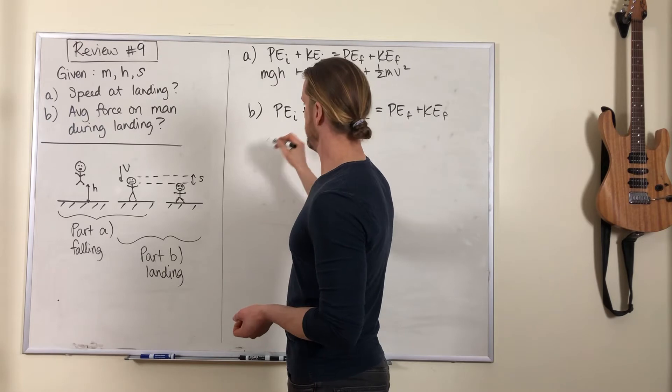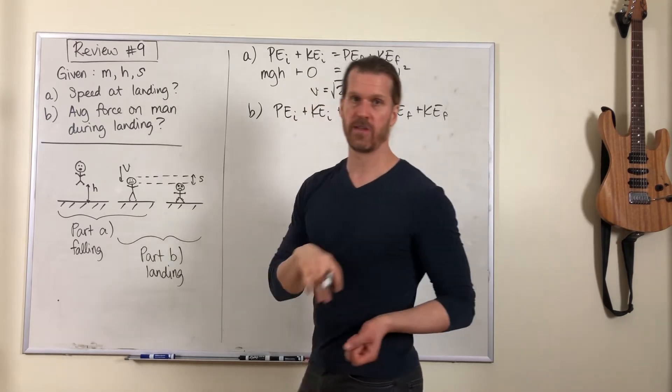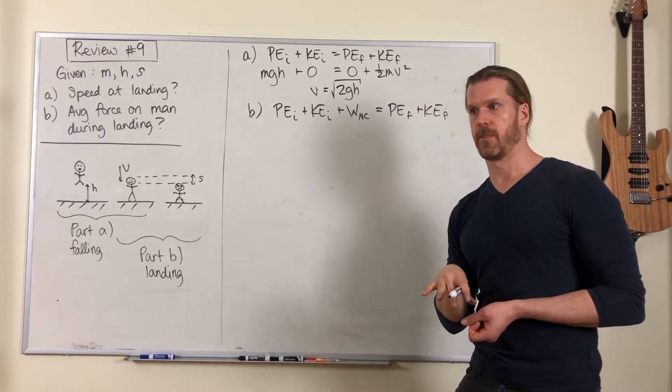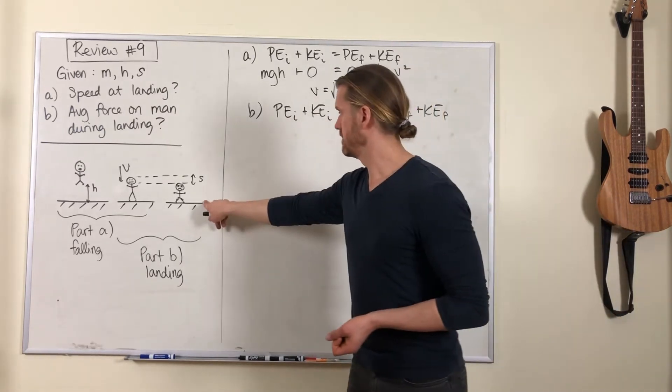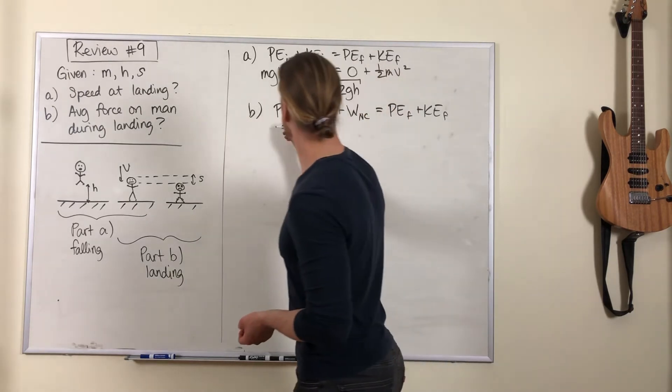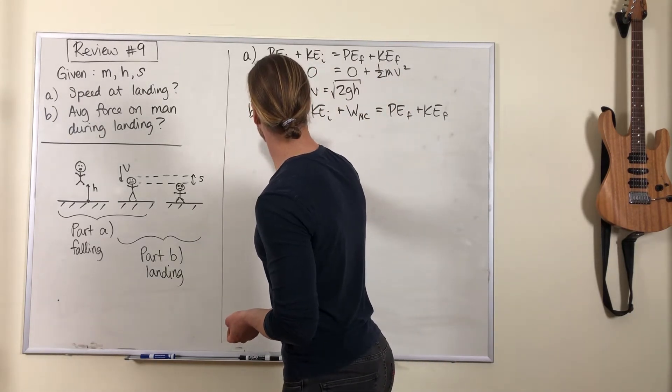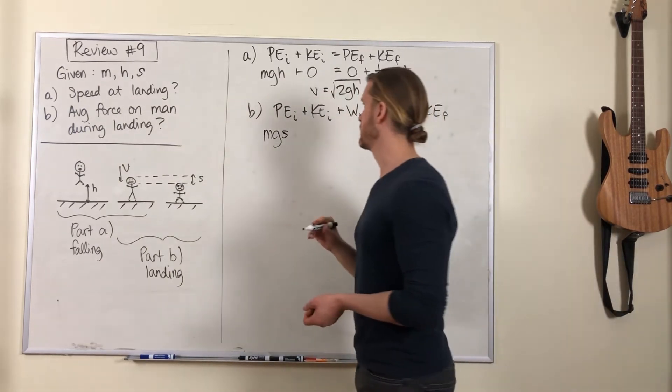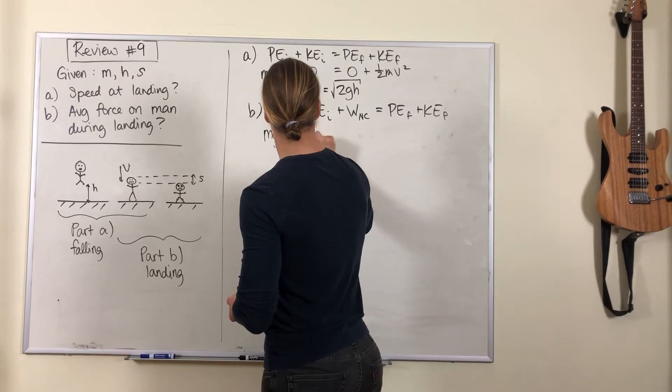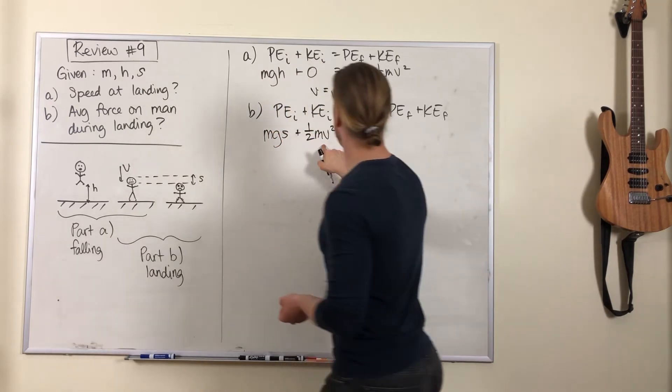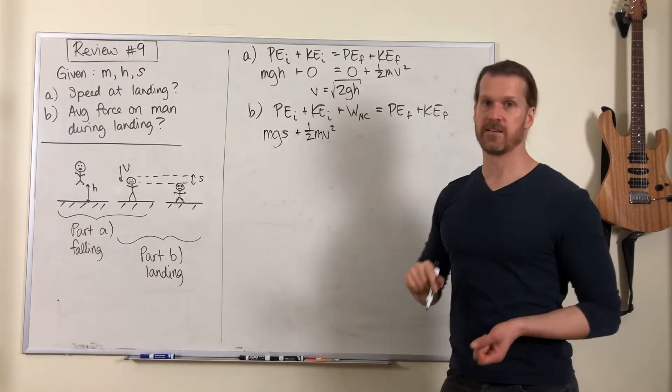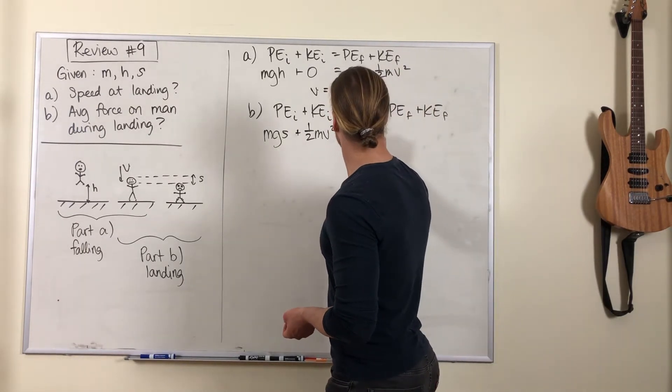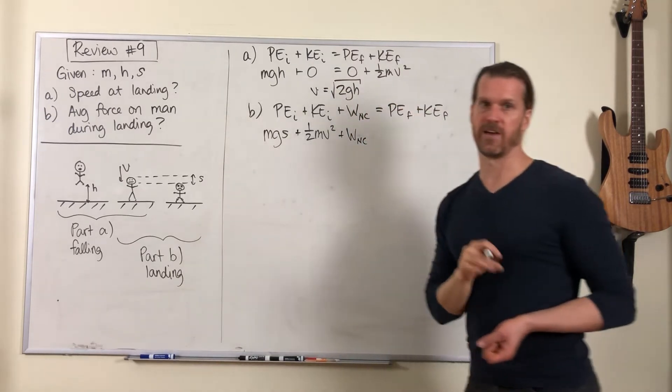Let's put in these formulas. The initial potential energy, now we're considering the reference point to be here when he's a little compressed, so the initial potential energy is mgs, that tiny little height above where he finishes. And this is one half mv squared, where we use that v value we just calculated in part a.